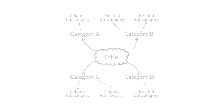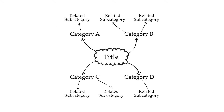The structure of a brainstorm is as follows. Major categories extend out from a central node. Lesser categories branch out of the major ones as subcategories, which can also develop their own related subcategories.